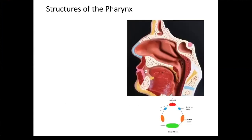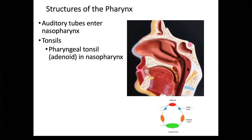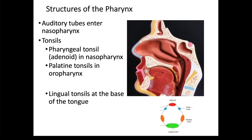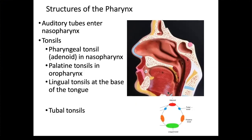The auditory tube connects the nasal pharynx to the middle ear, and the opening to the auditory tube is located right here. There are several different tonsils — recall that tonsils are lymphatic tissue. The pharyngeal tonsil, also known as the adenoid, is located in the nasal pharynx. The palatine tonsils, which are paired, are located at the entrance into the oral pharynx. The single lingual tonsil is located at the base of the tongue. And the tubal tonsils are located around the opening to the auditory tubes.